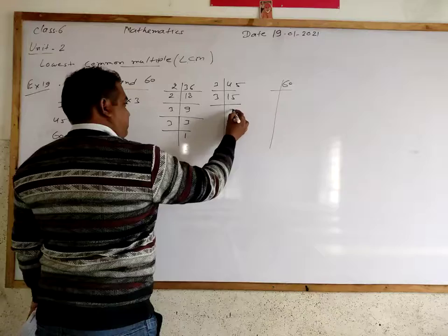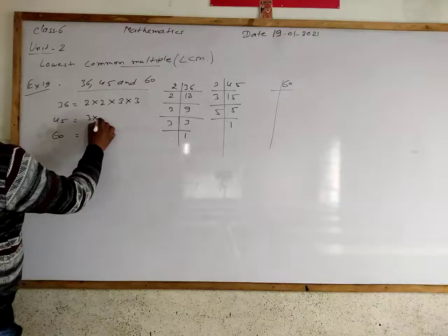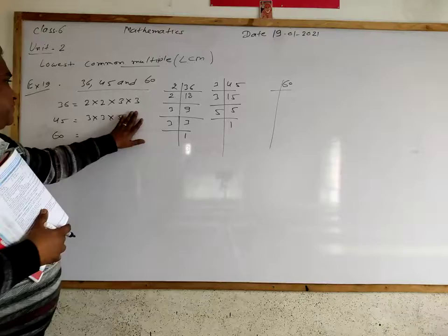For 45, we divide by 3, we get 15. Again divide by 3, we get 5. Divide by 5, we get 1. So factors are 3 multiply 3 multiply 5.